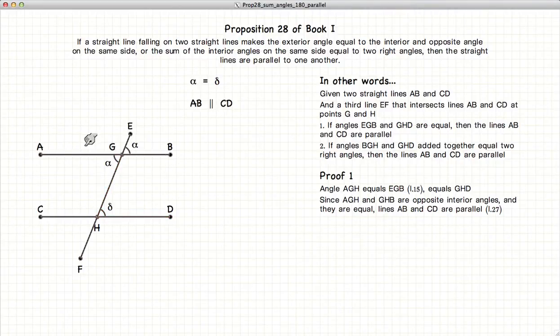So we've just demonstrated that AB and CD are parallel if alpha is equal to delta.